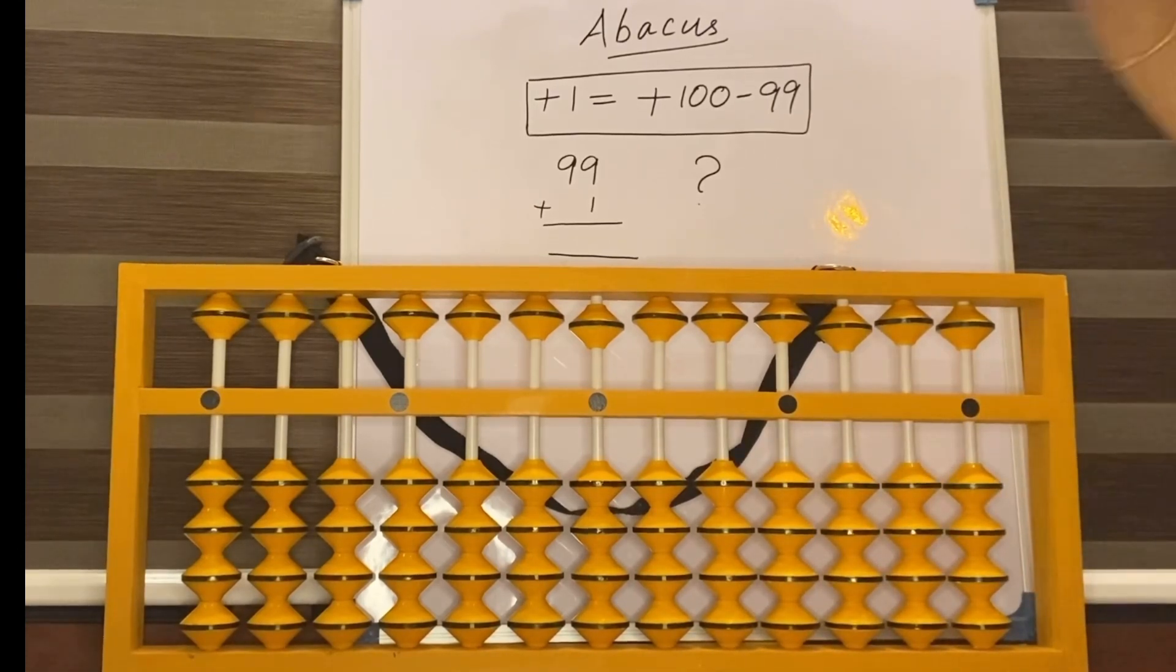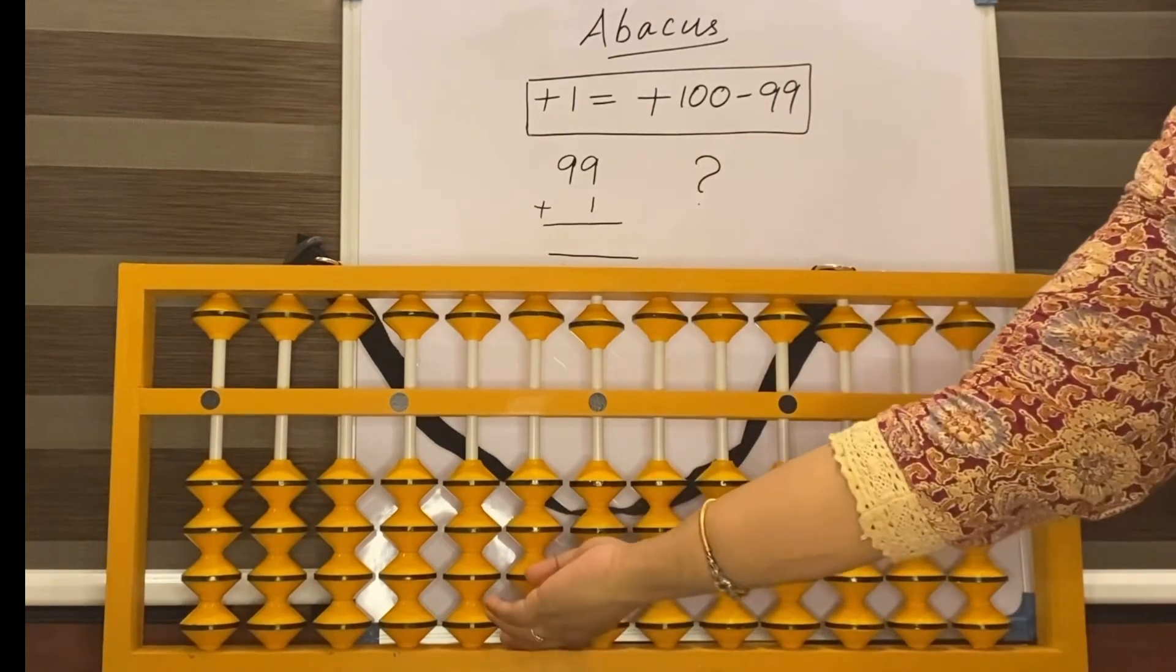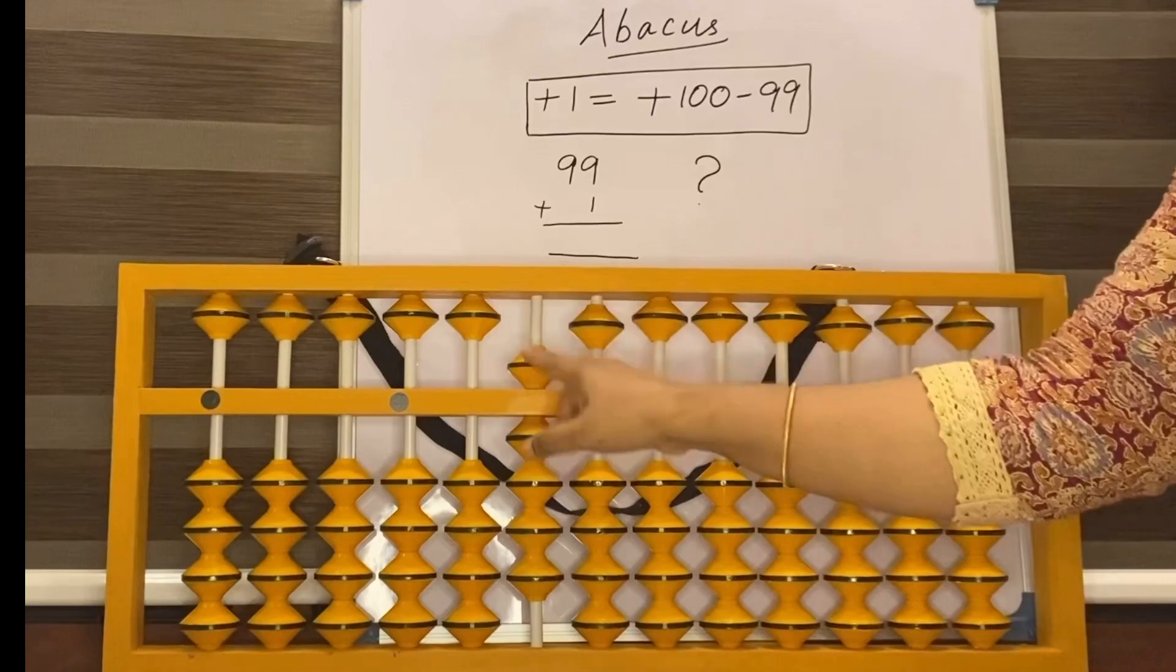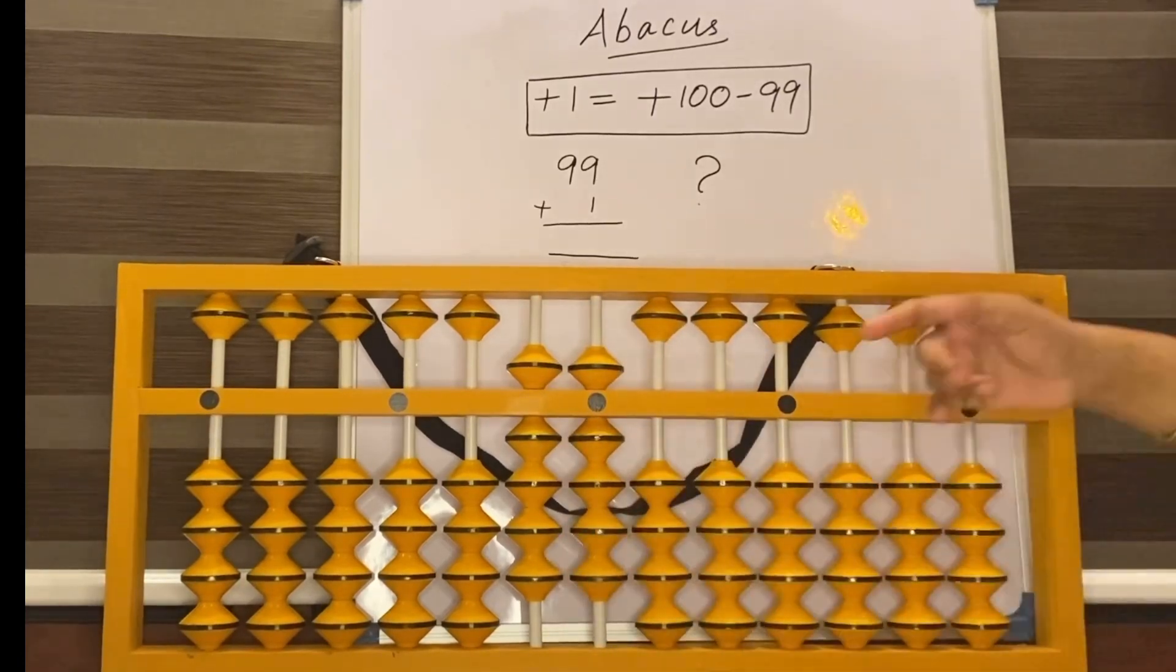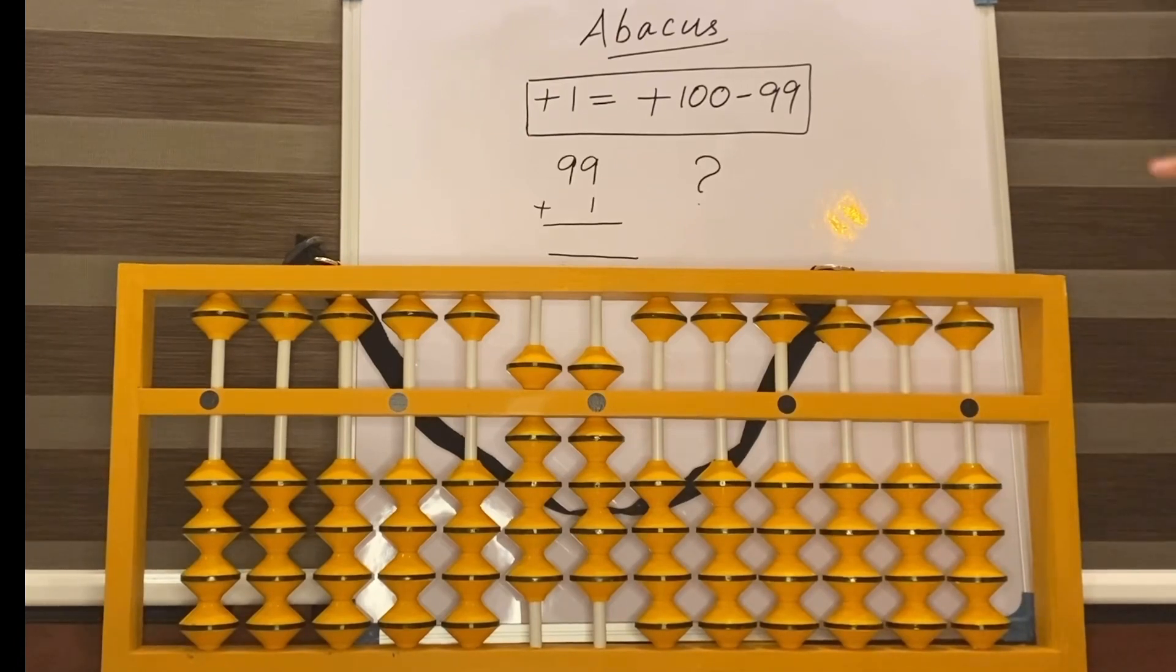Now see here how to add 99 plus 1. Take this 99: 90 in the 10 space, 9 in the 1 space. Now 99 is here. Add 1. How to add 1?